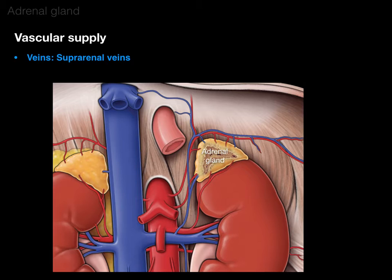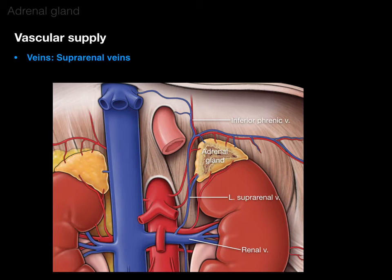The adrenal gland is drained by suprarenal veins. On the left, the left suprarenal vein drains into the left renal vein and sometimes into the inferior phrenic vein as well. The renal veins drain into the IVC. The right adrenal gland is different — the right suprarenal vein drains directly into the IVC.